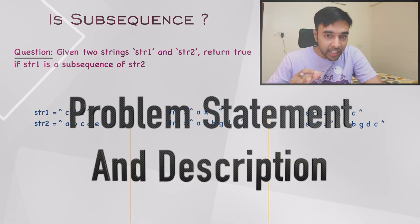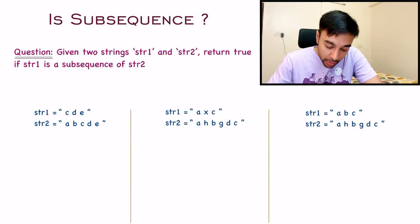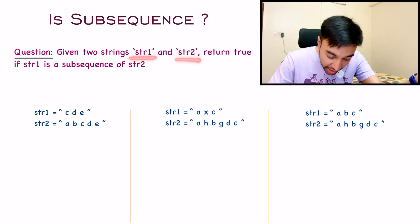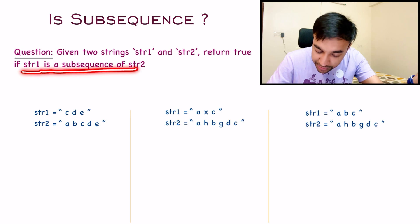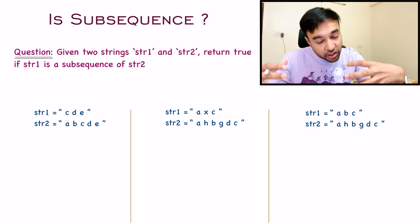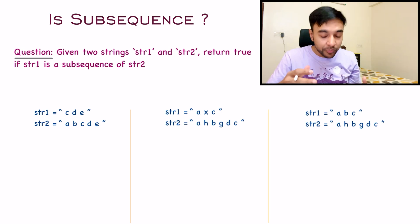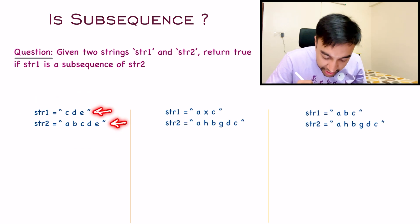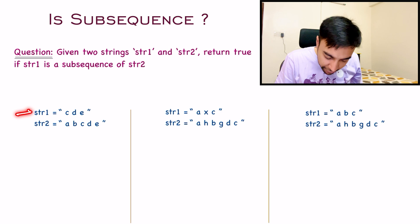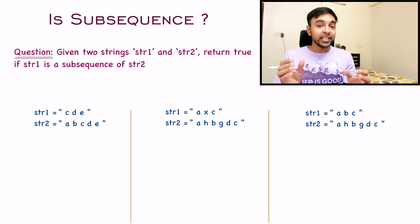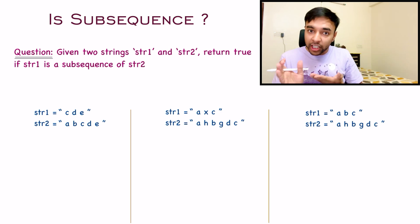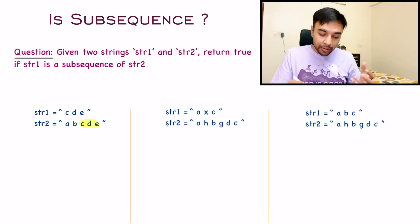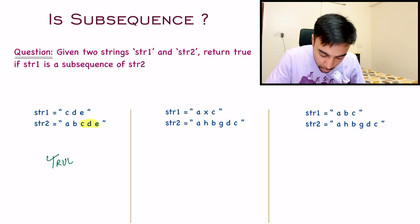Let's make sure we are understanding the problem statement correctly. In this problem, you are given two strings, str1 and str2, and you have to return true if str1 is a subsequence of str2. Looking at the first sample test case, my first string is 'cde' and the second string is 'abcde'. I have to check if str1 is a subsequence of str2 — that means, can you find str1 in str2? You can say yes, you are able to find 'cde' in there, so for the first test case you return true.